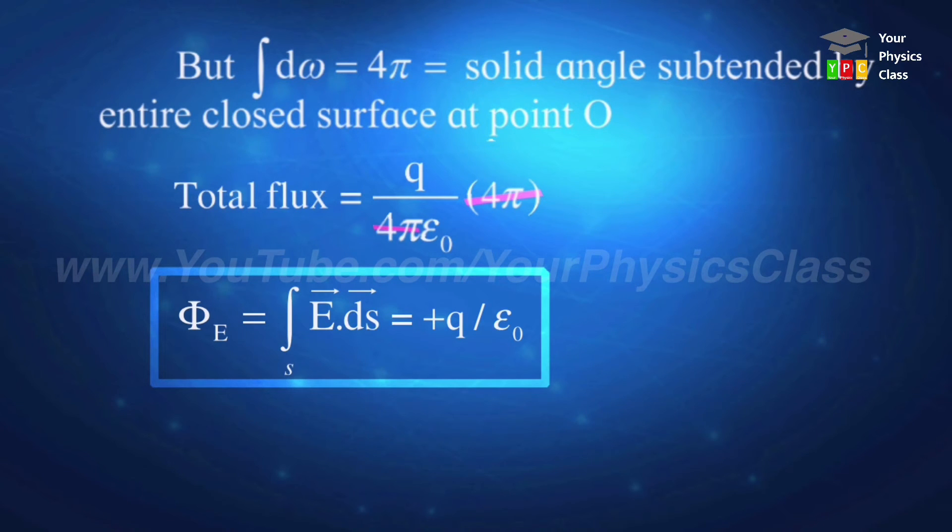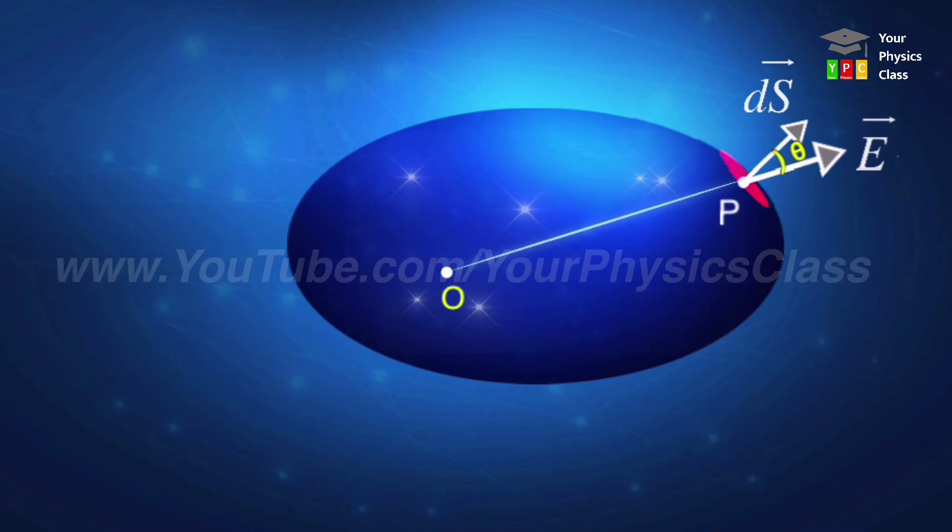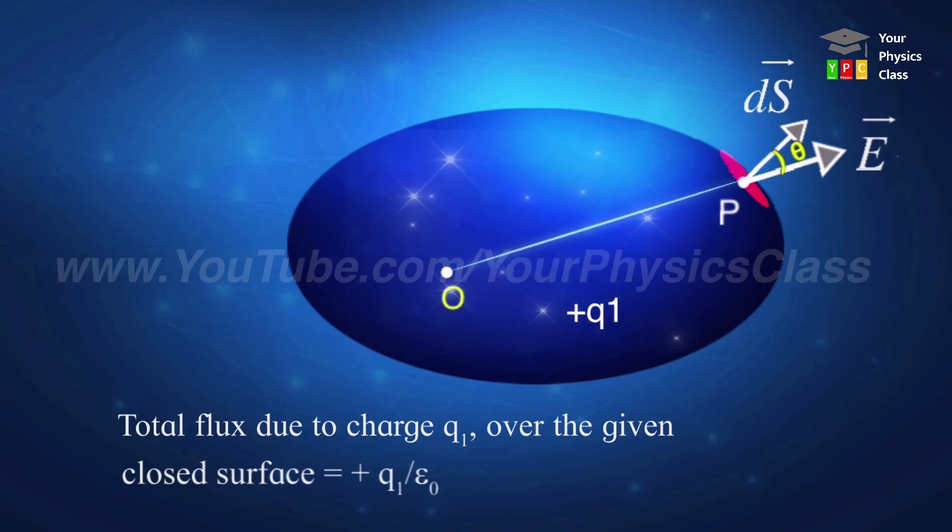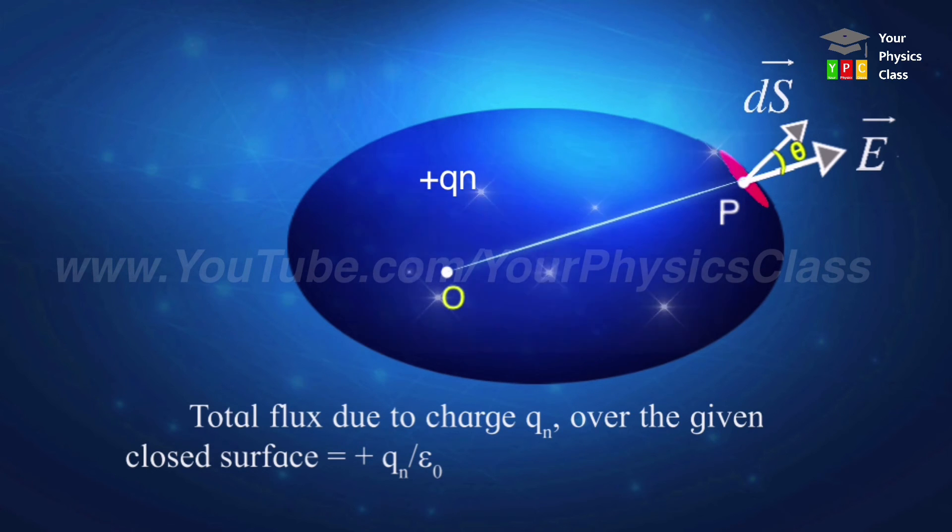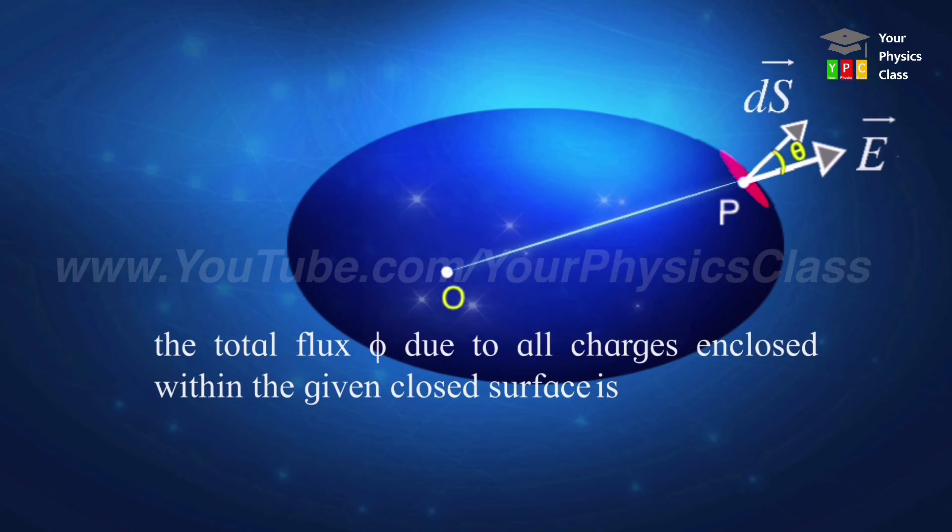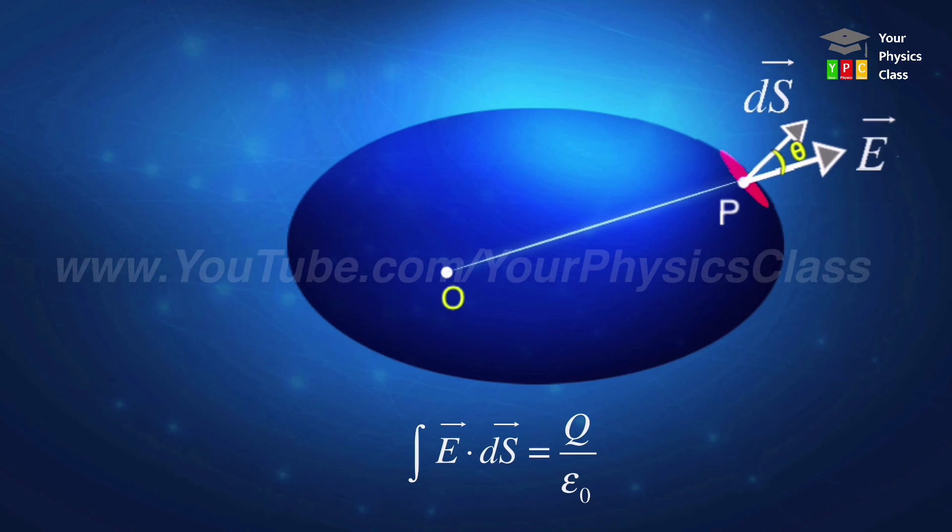This is true for every electric charge enclosed by the closed surface. Now here there are many charges, so suppose I consider q1 charge. Then for q1 charge, total flux should be plus q1 upon epsilon zero. If there is also q2 charge, then total flux due to another charge q2 should be plus q2 by epsilon zero. Similarly, the flux due to the nth charge should be plus qn by epsilon zero. So if I total all of them, I should get net flux which is given by summation i varies from 1 to n qi upon epsilon zero. Summation qi means net charge which equals capital Q. So we may write this equation as integration of vector E dot vector dS equals q upon epsilon zero. This is Gauss law.